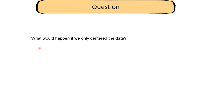Here's a question to consider: in the example I presented, I standardized the data by centering and dividing by the standard deviation. What would happen if we only centered the data — subtracting the mean but not dividing by the standard deviation? What would the PCA of the centered-only data look like? There will be a question related to this in the problem set.